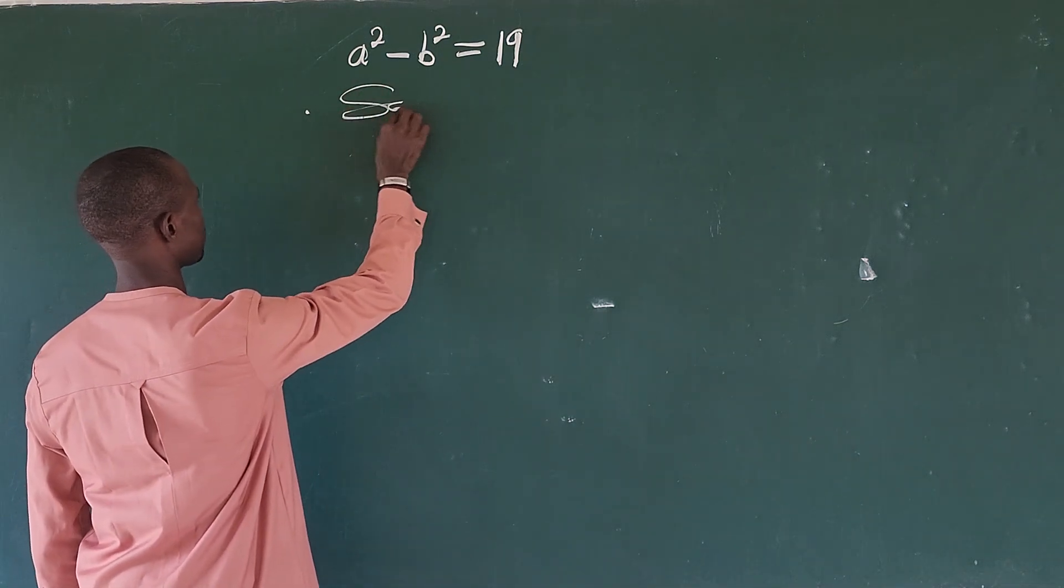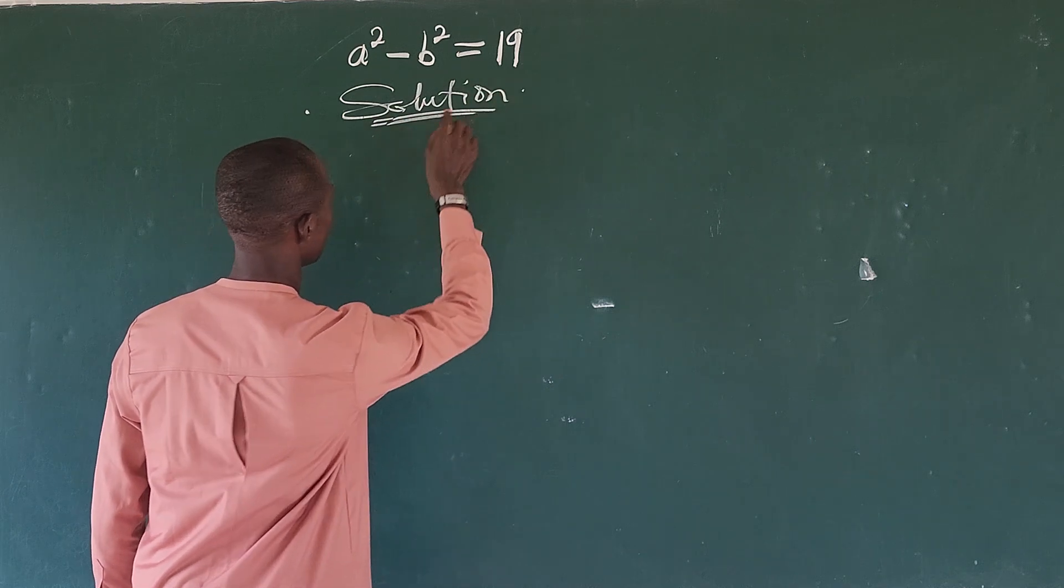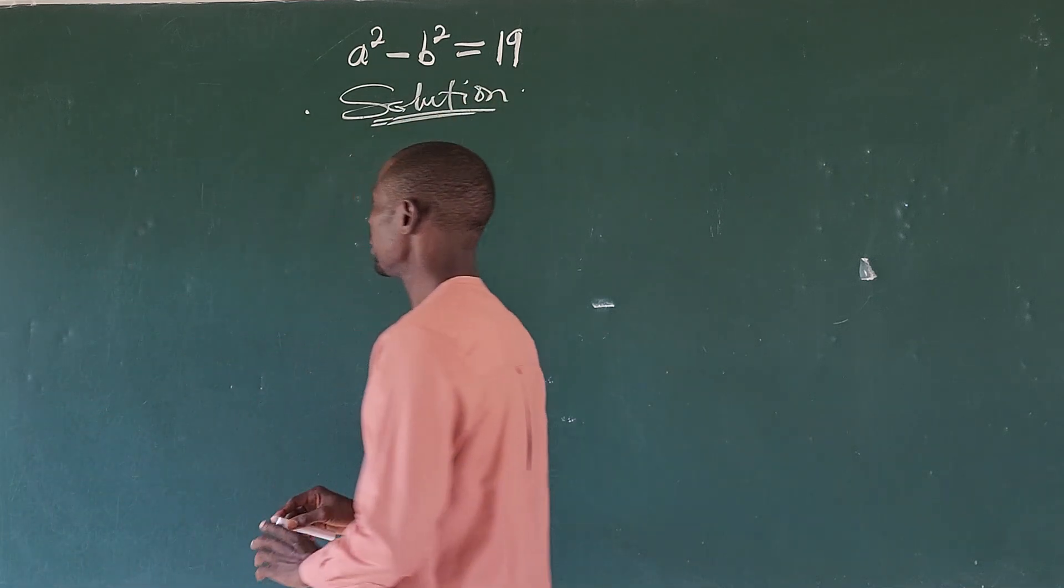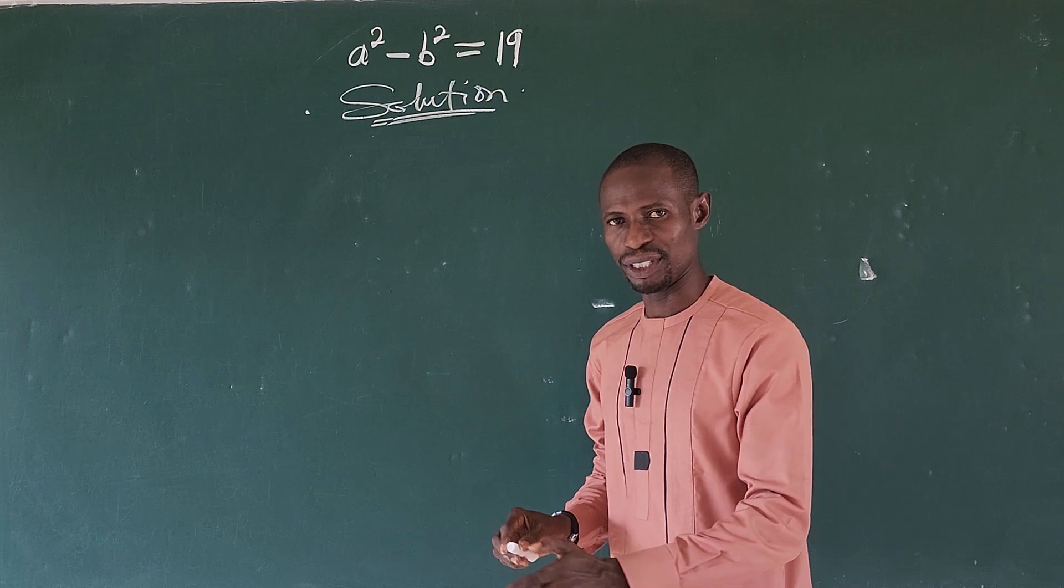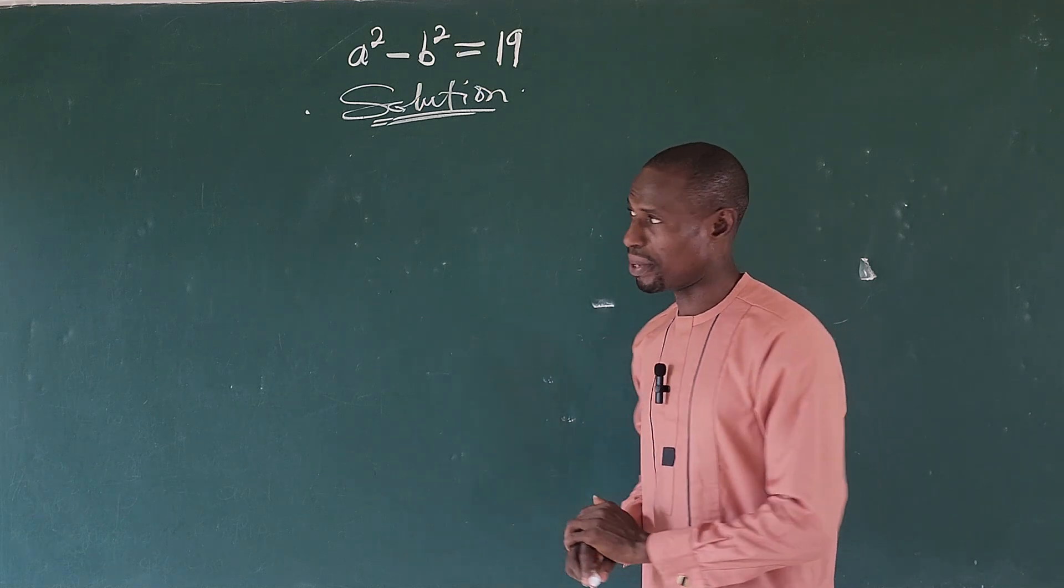So here we take our solution. Now if you look at the left hand side of the equation we got a special break identity.